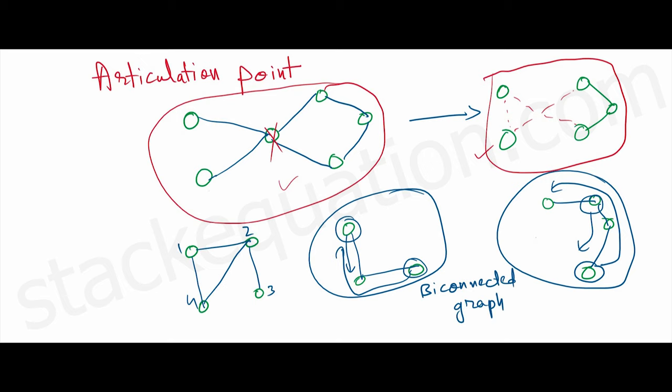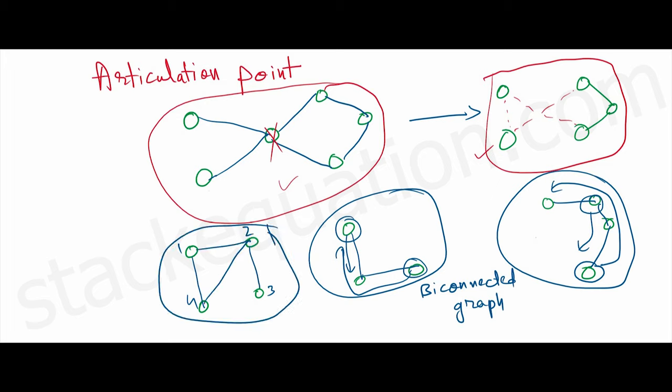Here is an example of a graph which is not a bi-connected graph, because if I remove vertex 2, we can't really reach from 3 to 4 or from 4 to 3, or 1 to 2 to 3 — the graph gets disconnected just because of one vertex. So we can't call this one a bi-connected graph.